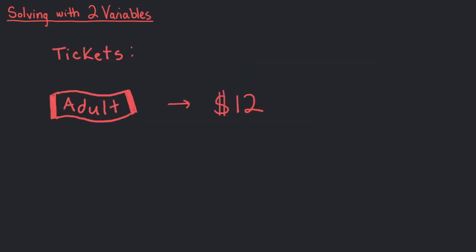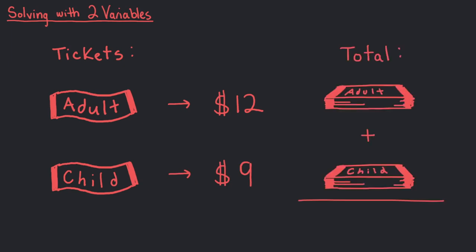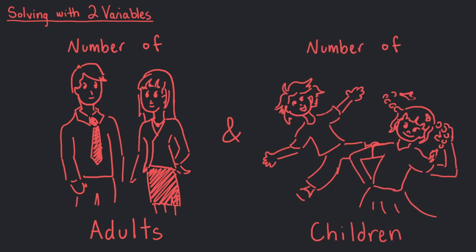Each adult ticket costs $12 while each ticket for a child costs $9. Tom's mom had to pay $105 for everyone's tickets. How many adults and children were at this party?